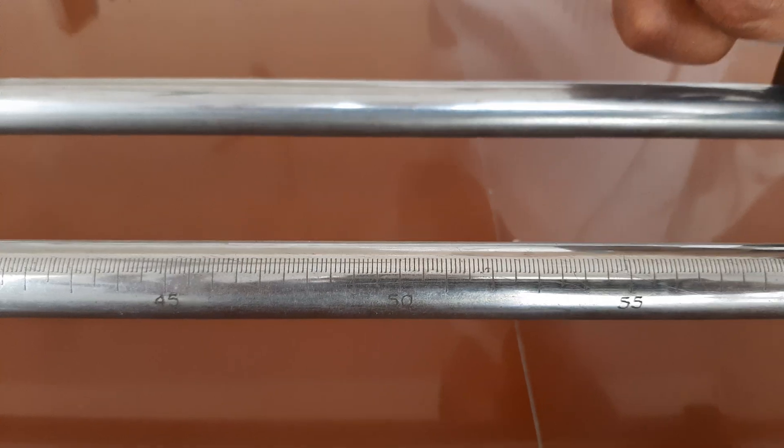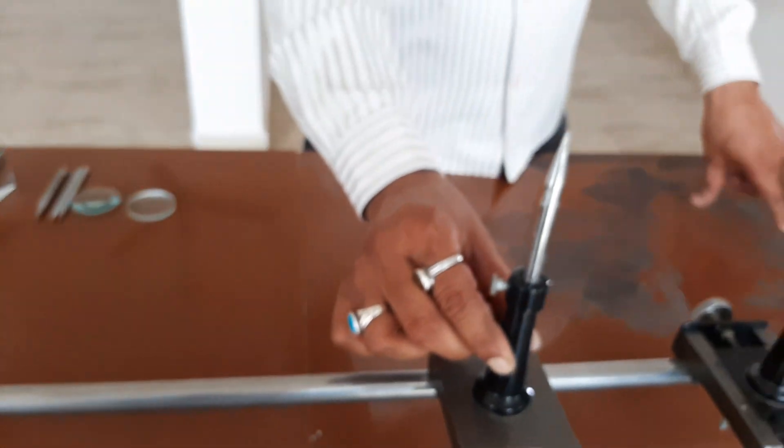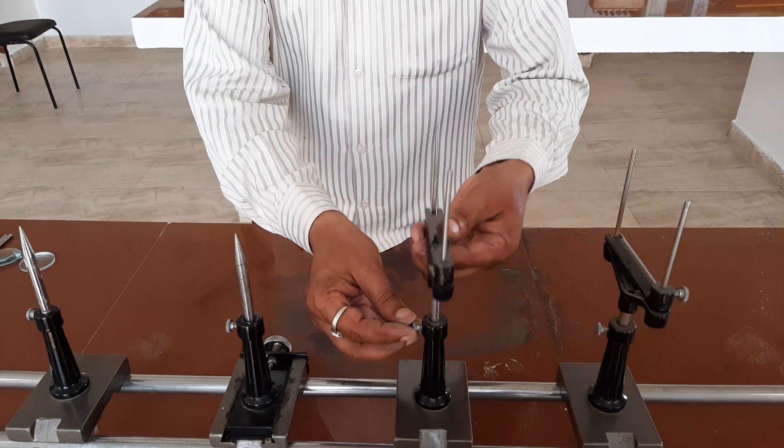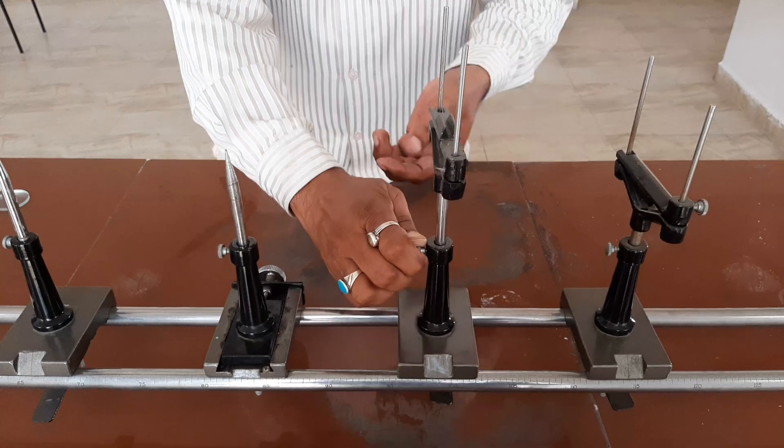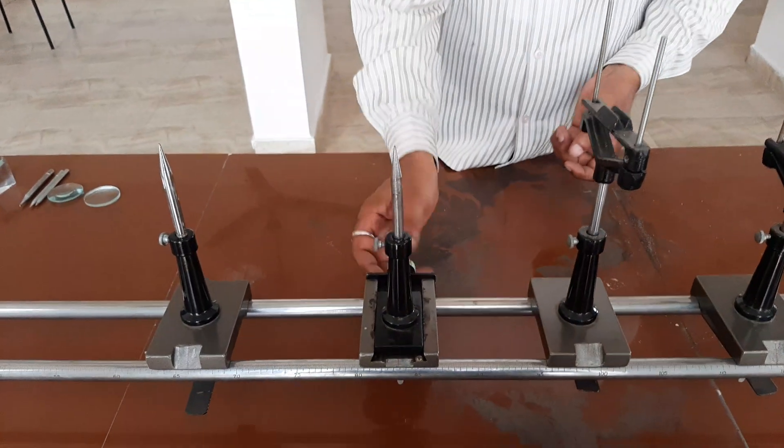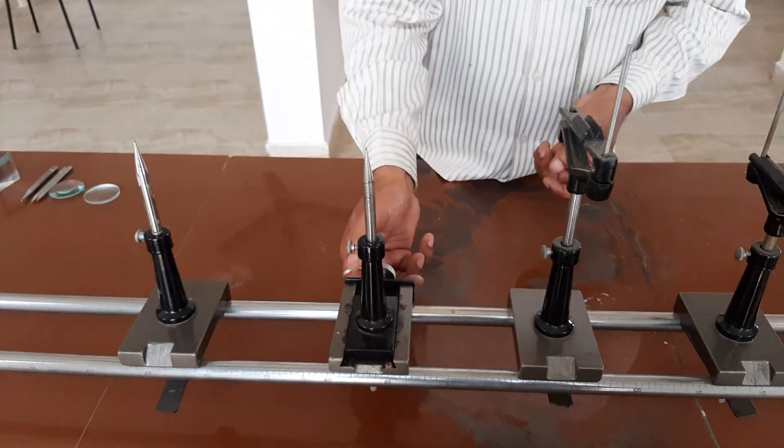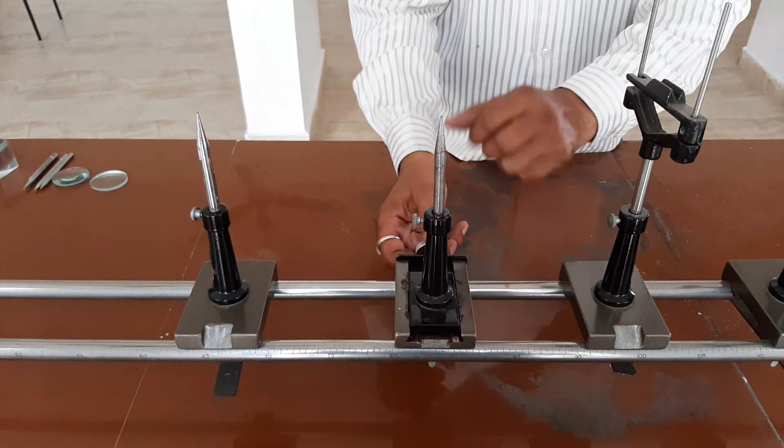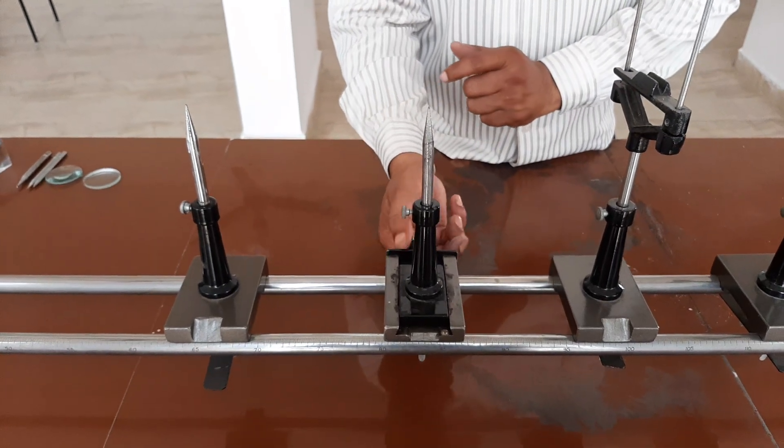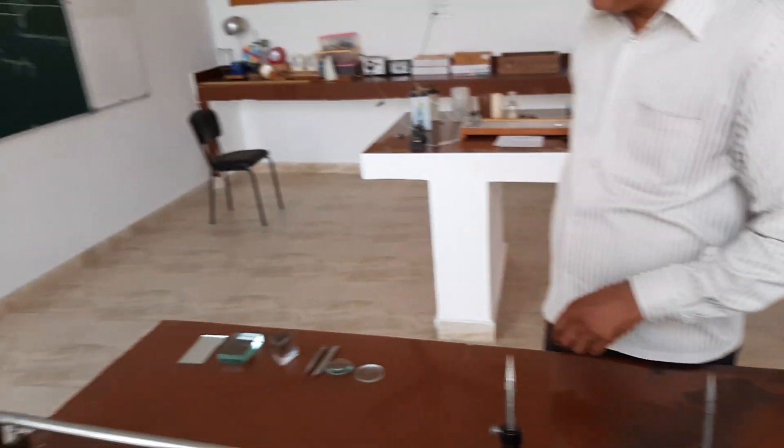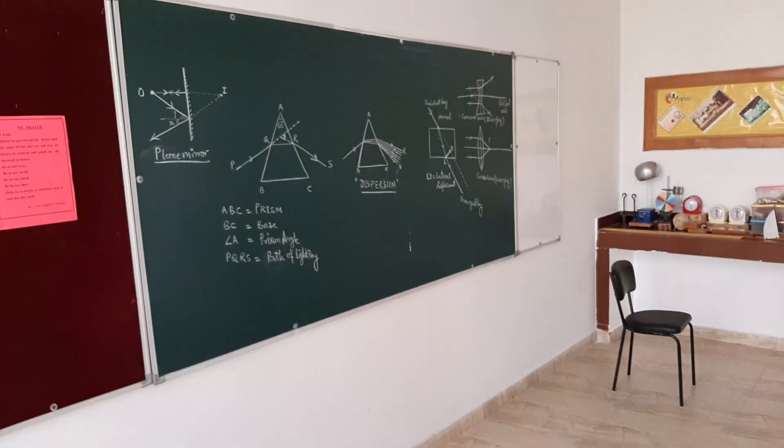This is the pin holder. This is lens holder. We can arrange the height of the lens by this screw. We can fix it where we want. This is the screw used to move left or right the holder as well as the object or pin. As you can see on the board, all these are used.